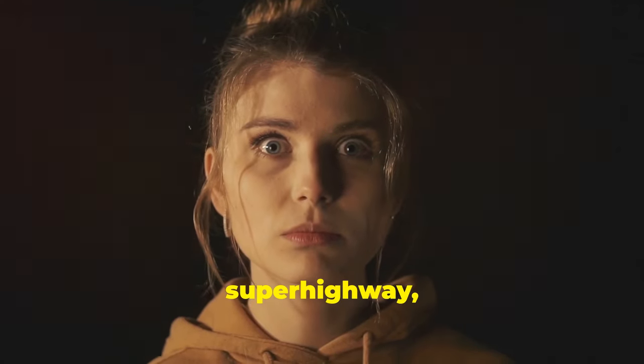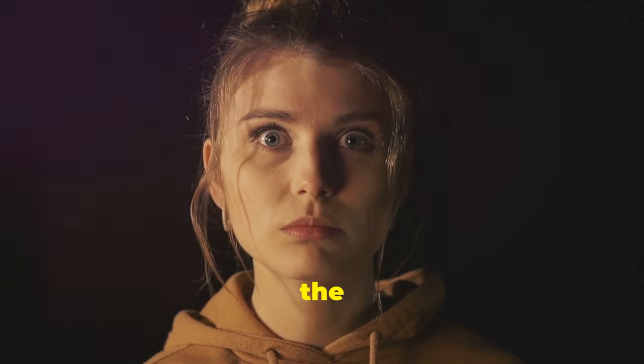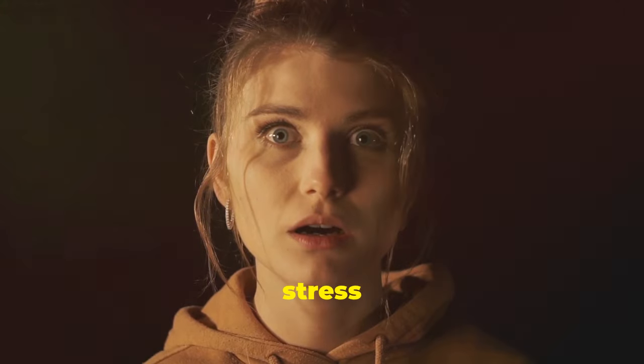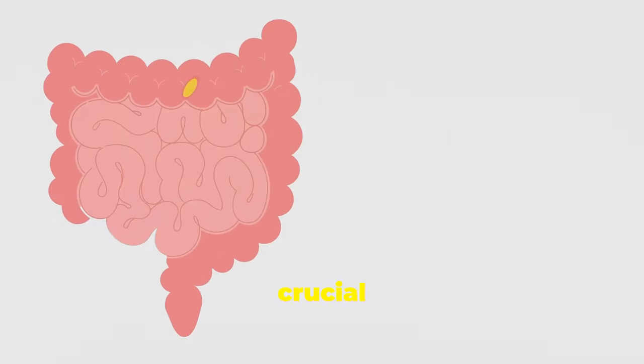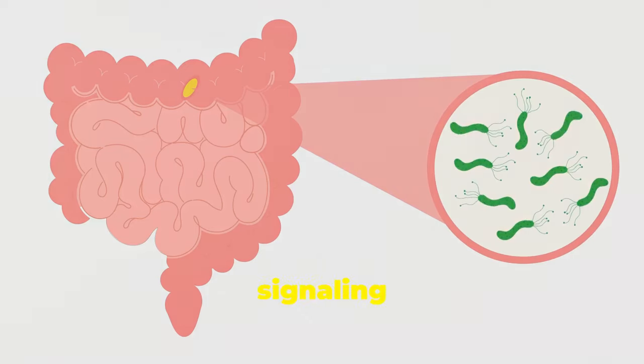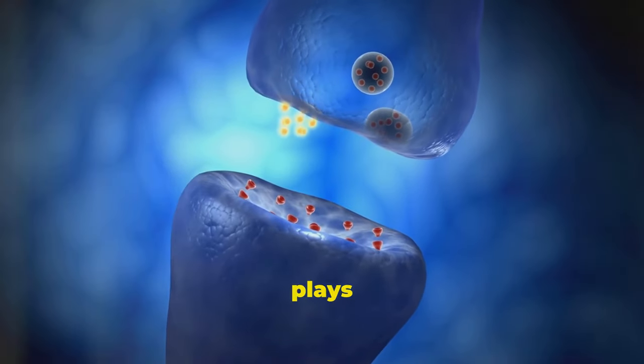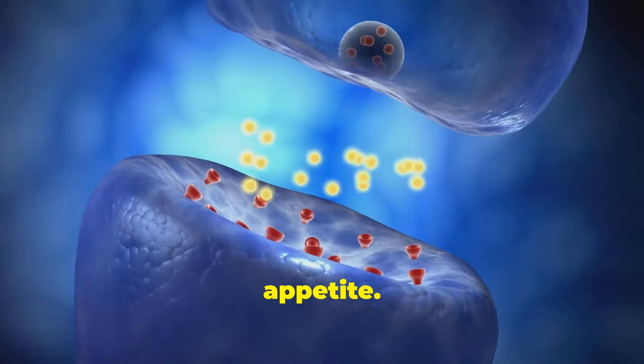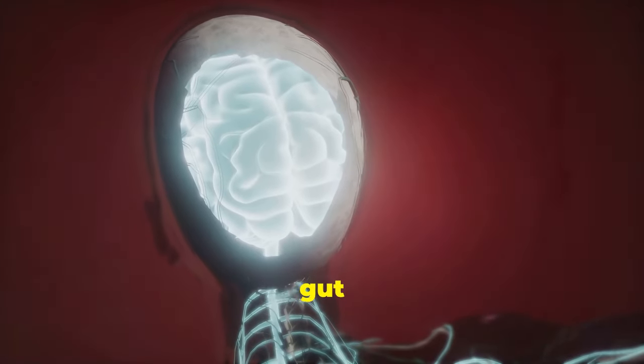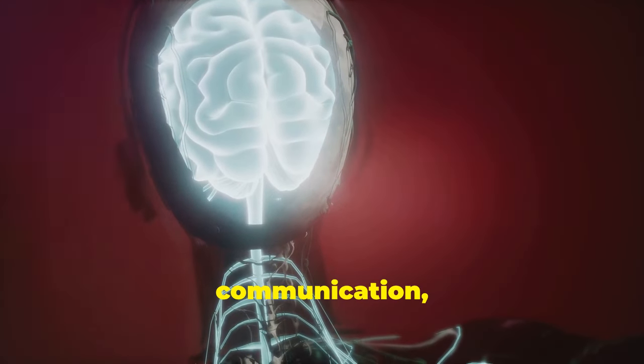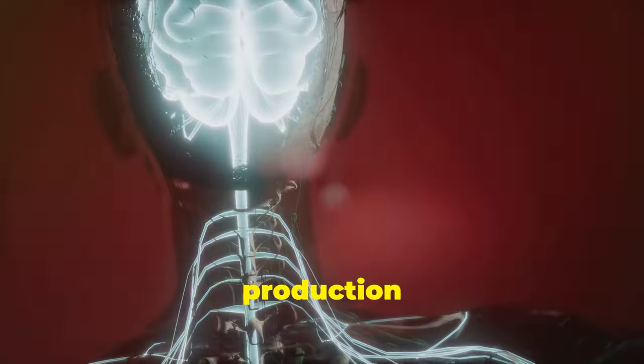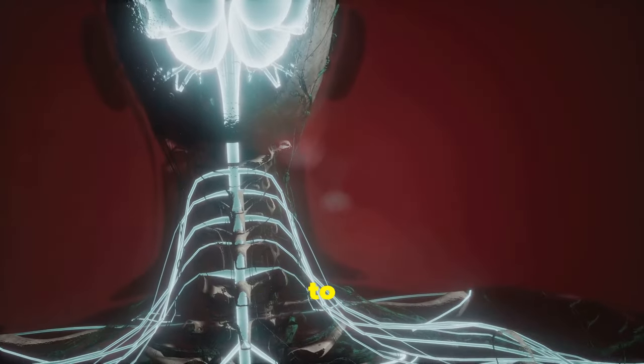The vagus nerve acts like a superhighway, transmitting signals between the gut and the brain, influencing mood, stress responses and even cognitive function. The gut microbiome plays a crucial role in this communication by producing neurotransmitters, short-chain fatty acids and other signaling molecules that directly impact the brain. For example, certain gut bacteria produce serotonin, a neurotransmitter that plays a vital role in regulating mood, sleep and appetite. Disruptions to the gut microbiome can disrupt this delicate communication, leading to imbalances in neurotransmitter production and potentially contributing to mental health issues.